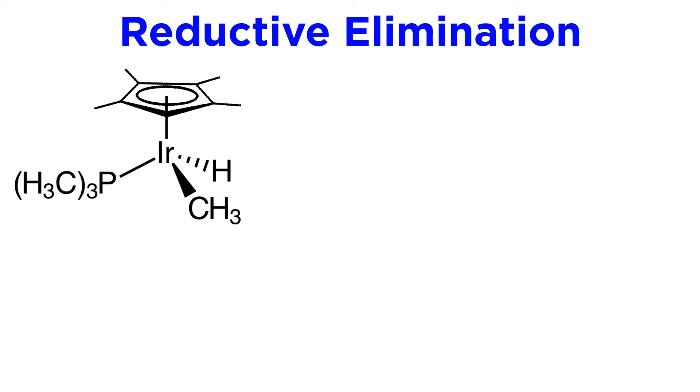Let's take for example this iridium complex with a polyhaptoligand, a trimethylphosphine, a hydride, and a methanide. If this were to undergo reductive elimination, what would result?